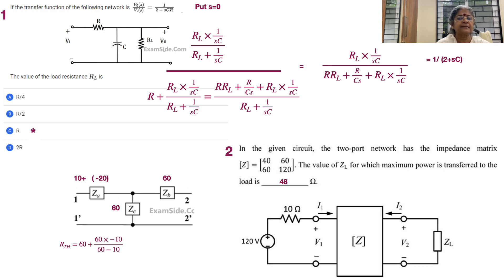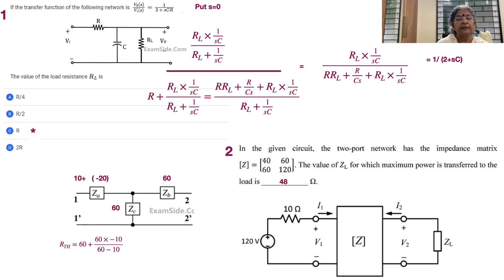Let's look at the first problem. There are two ports. V1 is the voltage given at the first port and we are looking for the output voltage V0, which is available across a resistor and capacitor combination. The resistor is called RL, the load resistance. This is normally the output circuit of any DC-DC converter. What is asked is of course the transfer function.